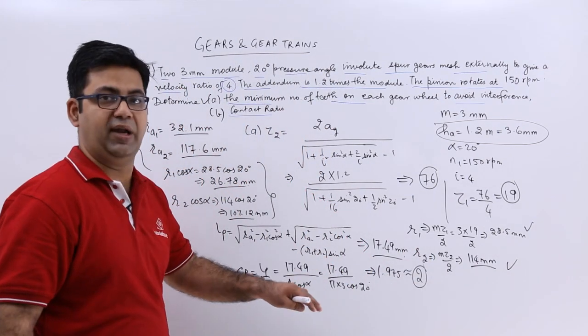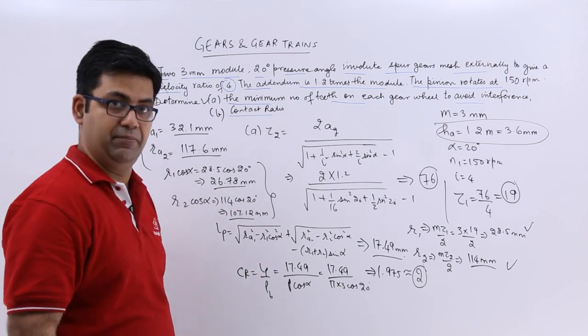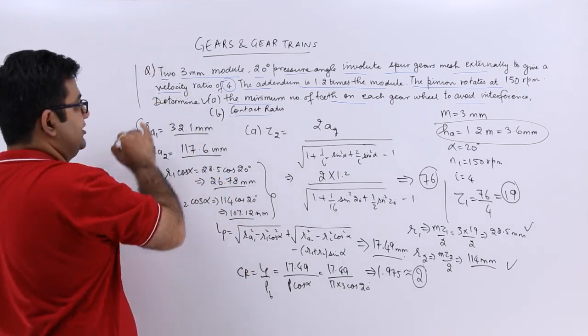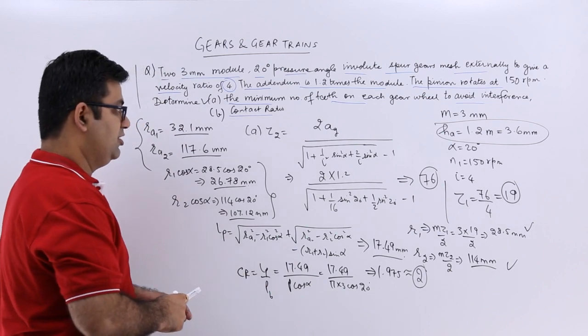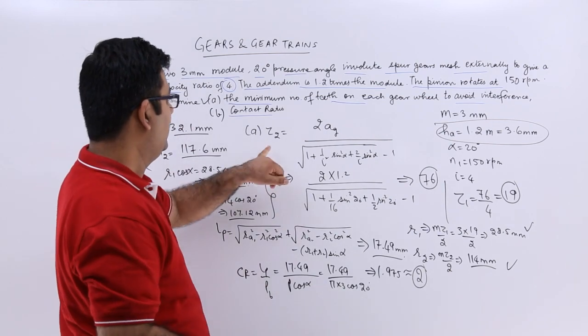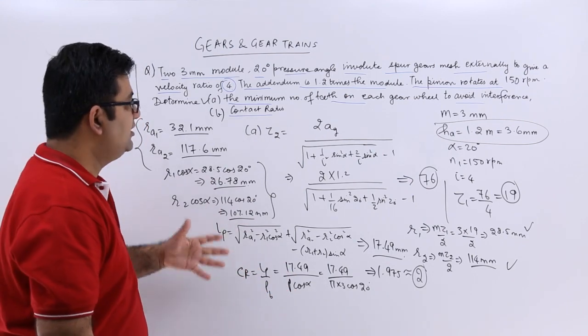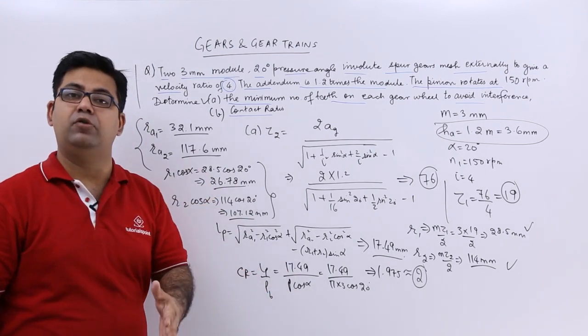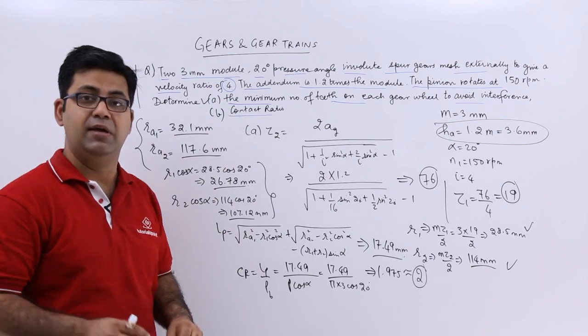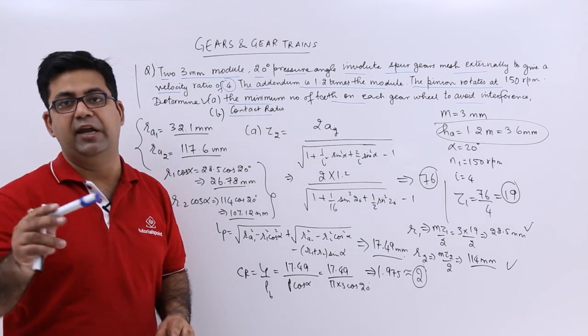So we have 2 pairs in contact at any given point of time. A very simple question which makes use of the formulas for the minimum number of teeth on gear and pinion. I hope you got this. Now after gears, we will move on to the next topic in this chapter and start talking about the gear trains.